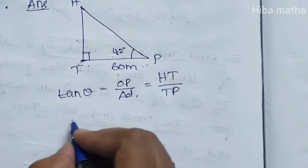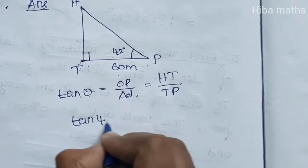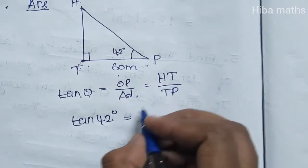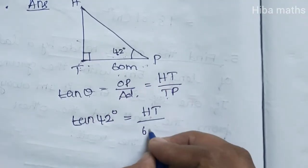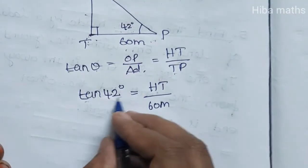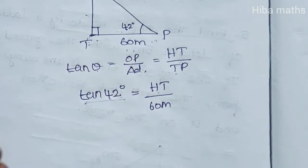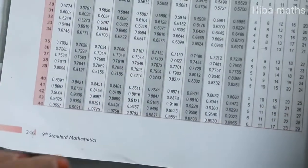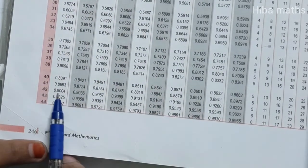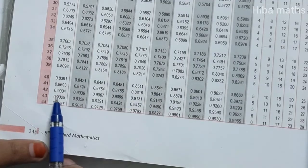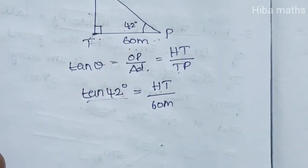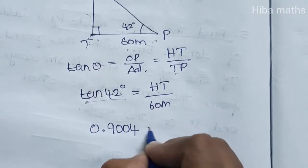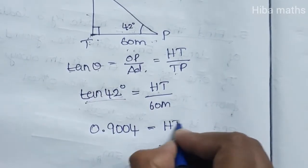So tan(42°) equals HT divided by 60. Looking up tan(42°) in the table, the value is 0.9004. Therefore, 0.9004 equals HT over 60.